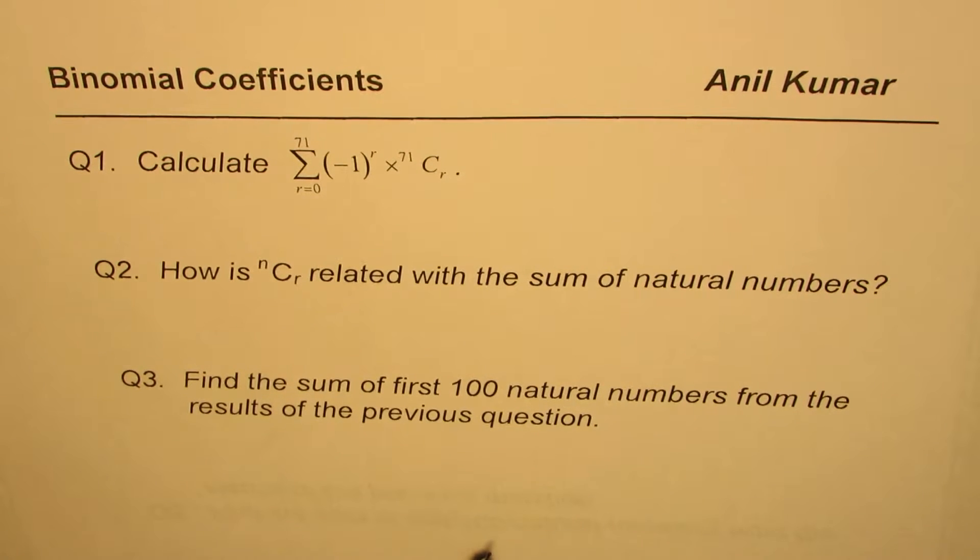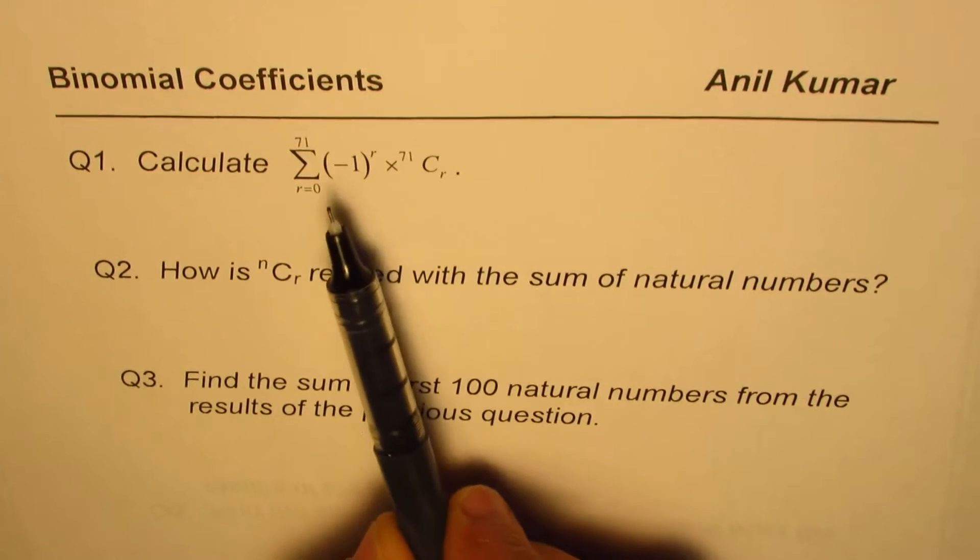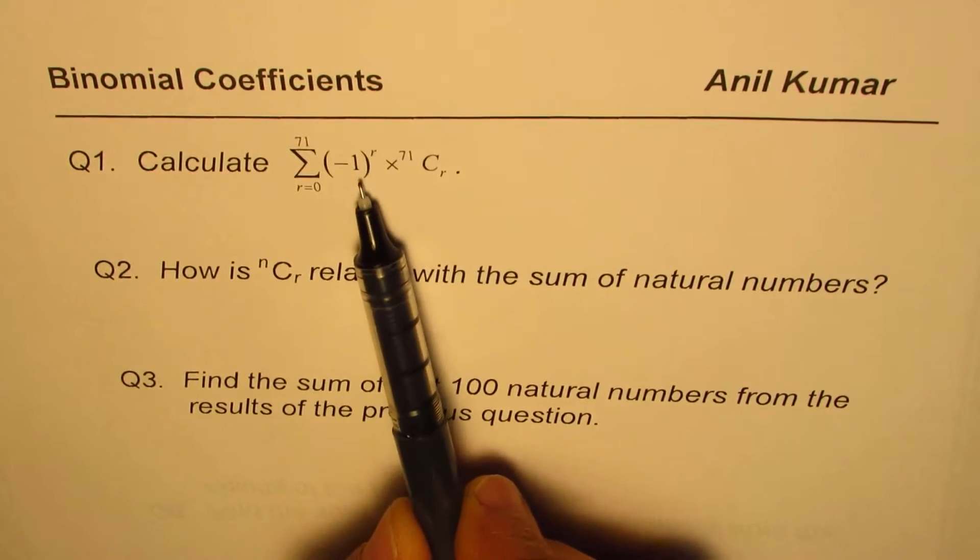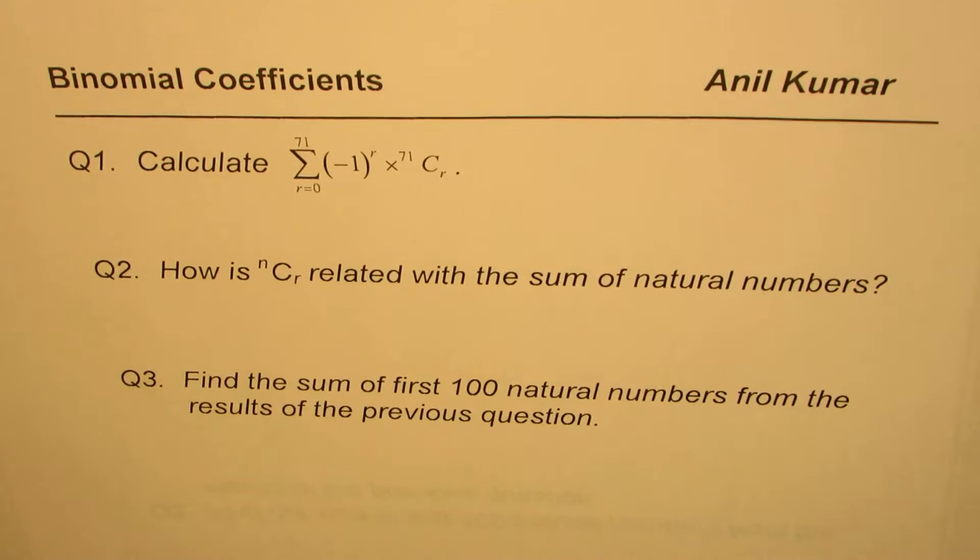Question number one is calculate the sum of minus 1 to the power of R times 71 choose R, where R goes from 0 to 71. Question number two is, how is nCr related with sum of natural numbers? And question number three is, find the sum of first 100 natural numbers from the results of previous question.